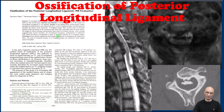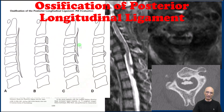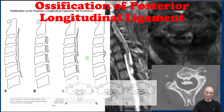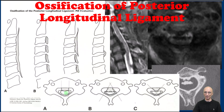I found this article in the literature where they looked at the ossification of posterior longitudinal ligament evaluation with MRI. They classified the OPLL into four categories: Type 1 was contiguous ossification, Type 2 is segmental ossification, Type 3 is mixed type, and Type 4 is focal ossification. On the axial images they were classifying the OPLL into square shaped, mushroom shaped, and triangular or mountain shaped.